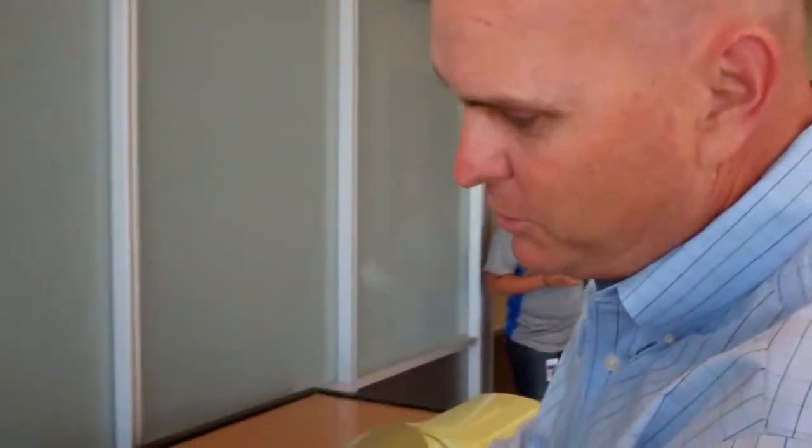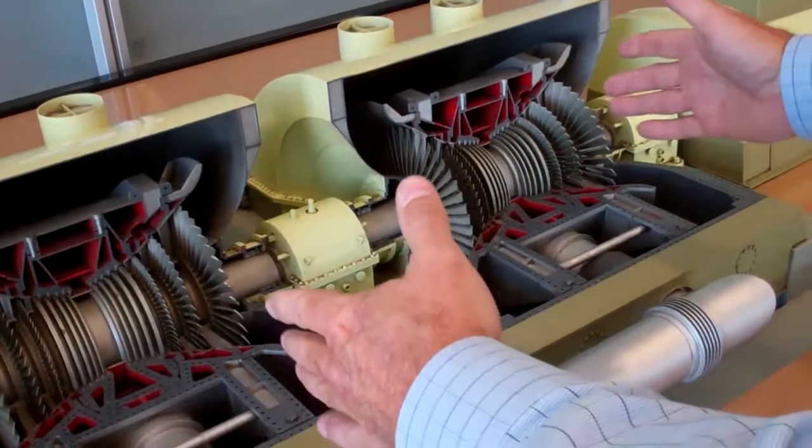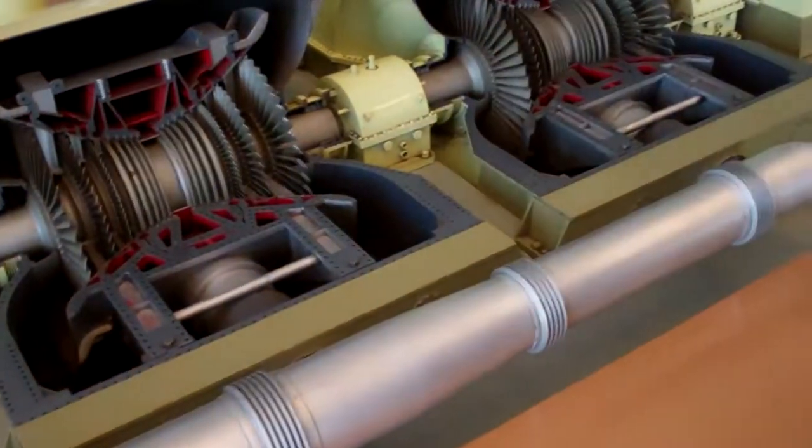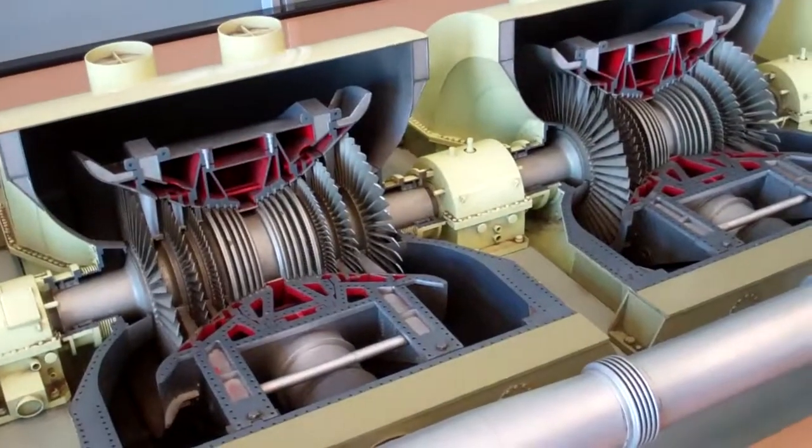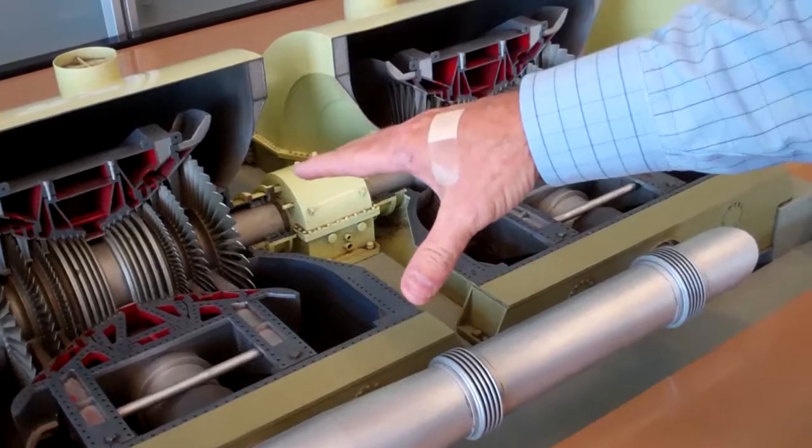It enters these low-pressure turbines at about 500 degrees Fahrenheit and about 150 pounds per square inch, then flows out and exhausts into this area of the condenser, which is below atmospheric pressure. The steam's down to about 120 degrees by the time it gets here.